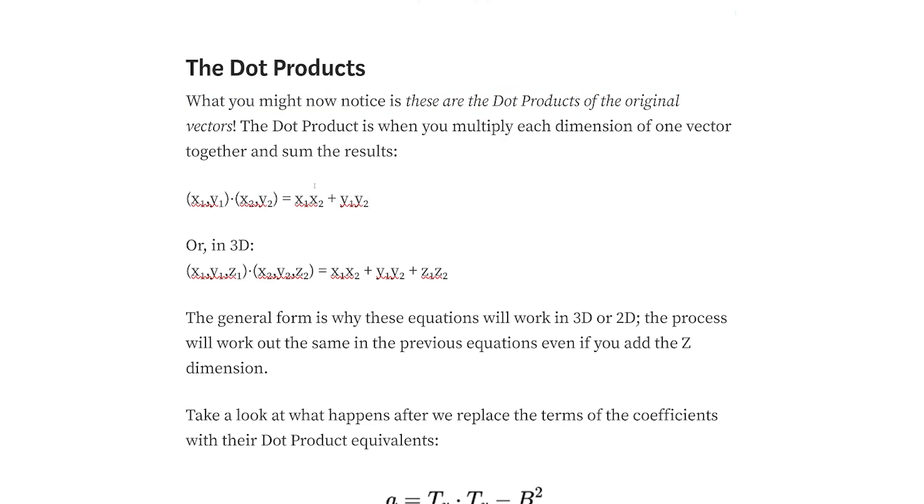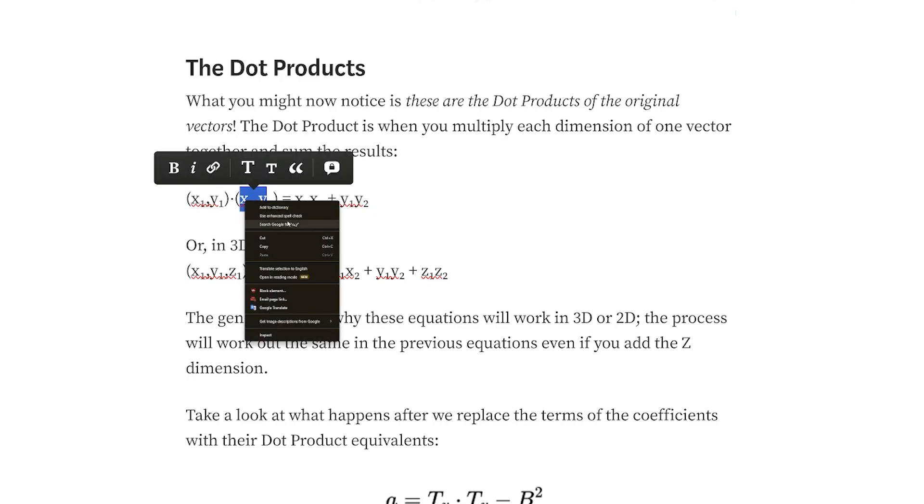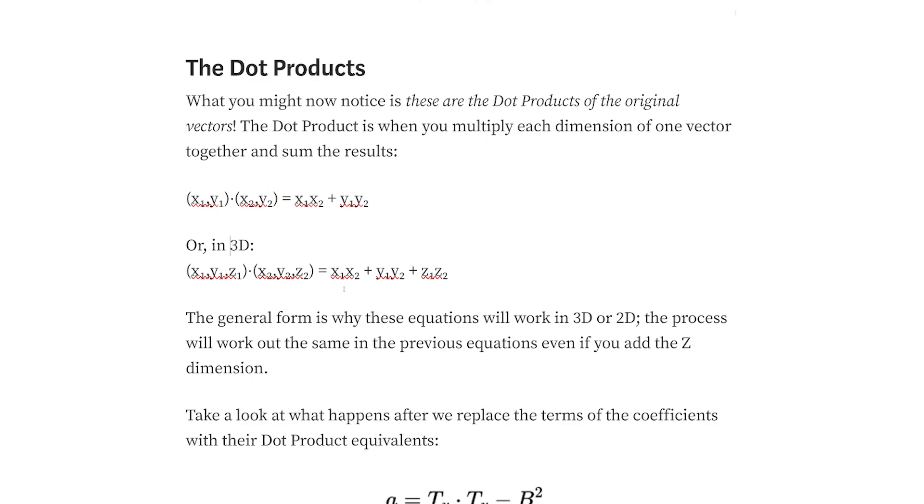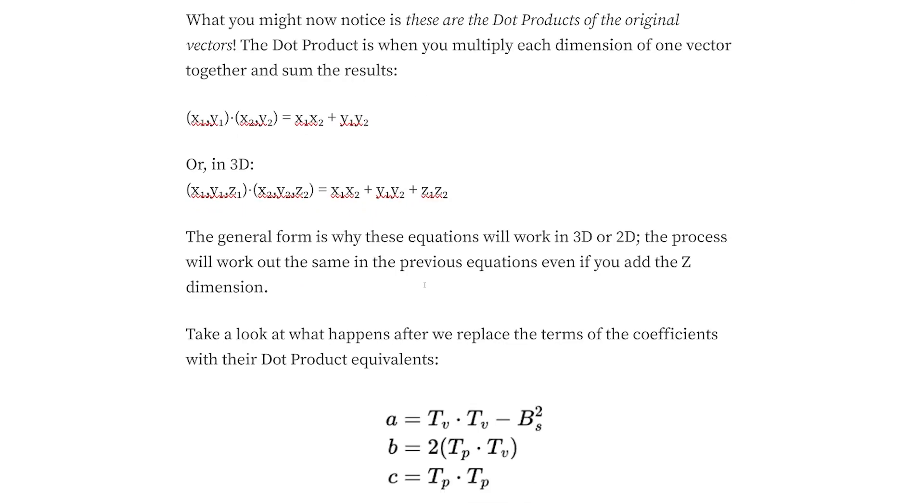So the dot product is when you multiply the dimensions of vectors together and sum them. So what that means is you multiply the X times the X and the Y times the Y or the Z times the Z and you add it all together. And so it works no matter how many dimensions for a vector you have. But generally, in game development, you only have two or three. So that's why it will work in 2D or 3D because when you call the dot product in your game engine, it's just a function. It'll do it the same no matter what you give it.